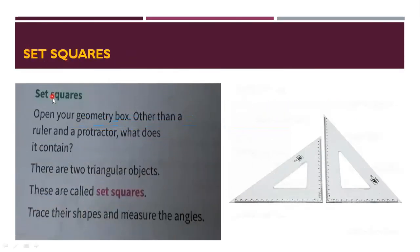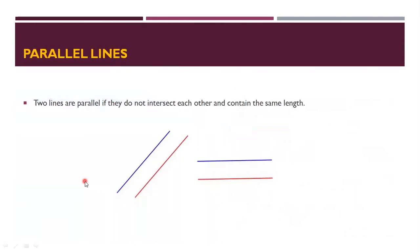Next, set squares. Open your geometry box — other than a ruler and a protractor it contains two triangular objects called set squares. Trace their shapes and measure the angles. Next, parallel lines: two lines are parallel if they do not intersect each other and are equal in length. Even if extended, parallel lines will never intersect at any point.